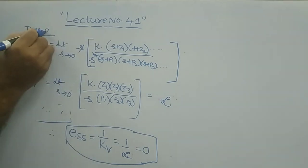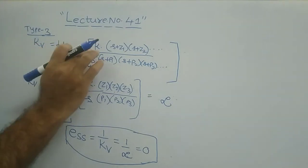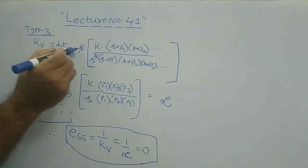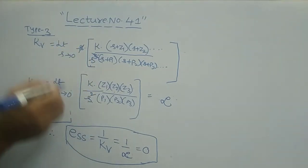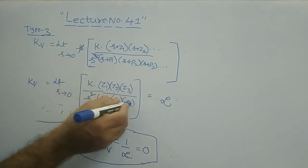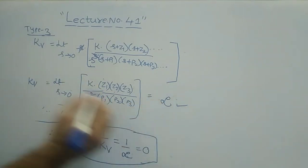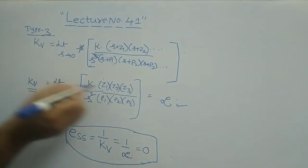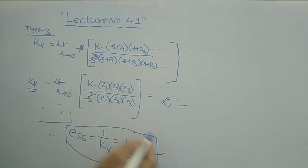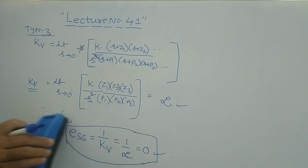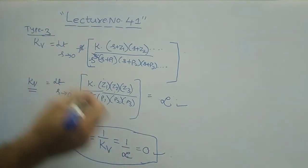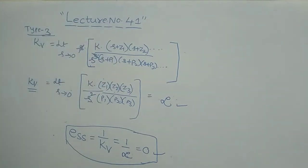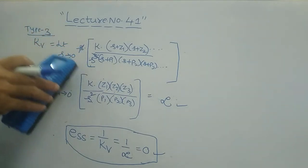For type 3 and higher systems, with s cubed or higher in the denominator, after canceling the s from the KV numerator there remains s squared or higher. Substituting s equals 0 gives 0 in the denominator, making KV infinite and ESS equals 1/infinity equals 0. From type 2 onwards — type 2, 3, 4, 5 and so on — the steady state error with unit ramp input is 0.